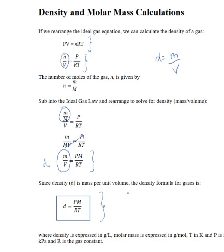Now, like before, we need to choose our units carefully. We have our two R values: 8.314 is used when our pressure is in kilopascals, and 0.08206 is used when our pressure is in atmospheres. As always, our temperature is in kelvins, our molar mass is in grams per mole, and our density, like we said previously, is in grams per liter.